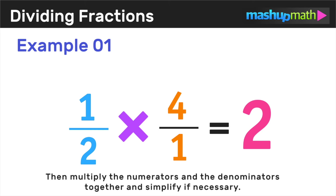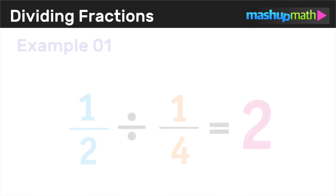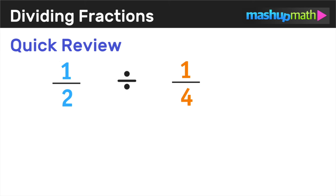So now let's just draw a conclusion. Remember that the original example wanted us to find what was the value of 1 half divided by 1 fourth. And we just figured out that the answer is 2. So before we move on to a few more examples, let's take a quick review of how we use the keep, change, flip method for dividing fractions to solve this problem.